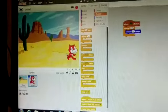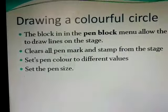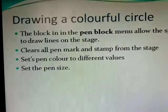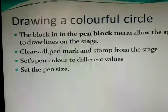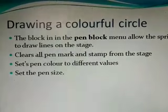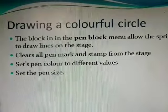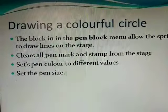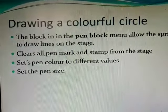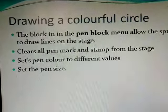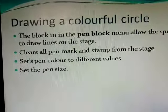Now I will show you drawing a colorful circle, which means with the help of the paint block we can draw a colorful circle — our sprite will draw a colorful circle. The blocks in the paint block menu allow the sprite to draw lines on the stage. It will clear all the paint marks and stamps from the stage, set the paint color to different values, and set the paint size as well.